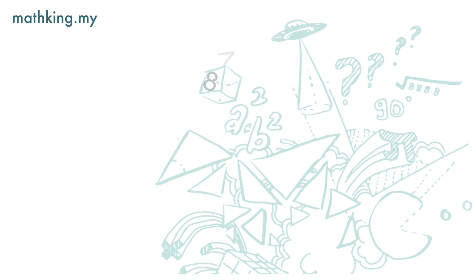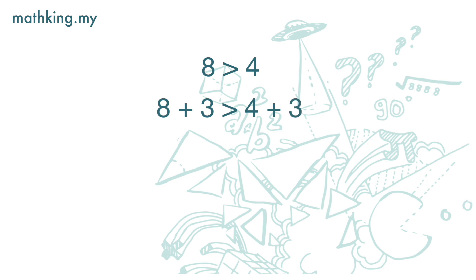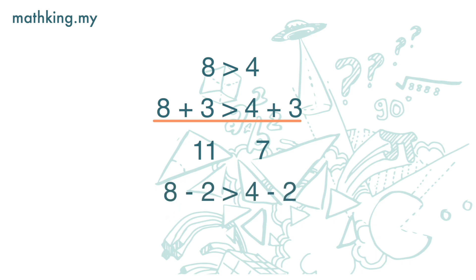Let's look at this one: 8 is greater than 4. If I add 3 to both the left-hand side and the right-hand side, then the left-hand side is 11 and the right-hand side is 7. So 8 plus 3 is greater than 4 plus 3 — this still holds true.